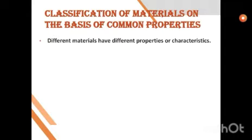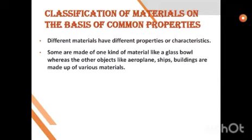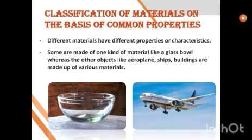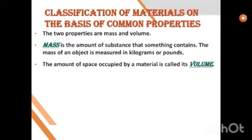Let us see the classification of materials on the basis of common properties. Different materials have different properties or characteristics. Some are made up of one kind of material, like a glass bowl, whereas other objects like aeroplanes, ships, and buildings are made up of various materials. In an aeroplane, the different parts — seats and all — are made up of different materials. The classification of substances is basically based on two properties: mass and volume.